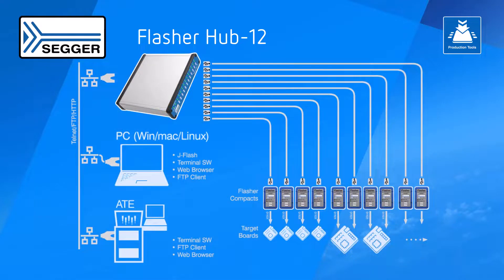With the Flasher Hub 12 solution from SEGGER, you get fast and easy data transfer from development to production, as well as easy monitoring and updating from a nearby location.